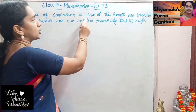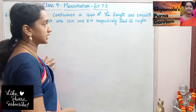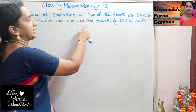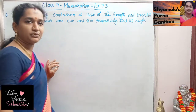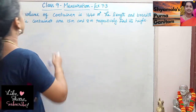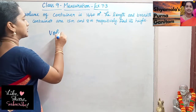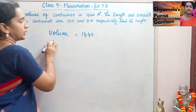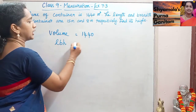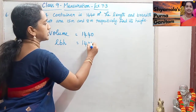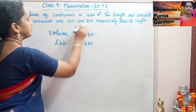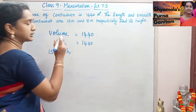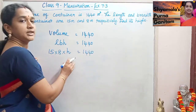The volume of a container is 1440 cubic meters. The length and breadth of the container are 15 and 8 respectively. Find its height. So, the volume of a container is given as 1440. We know that volume is length into breadth into height, that is given as 1440. Length and breadth are given as 15 and 8. We are asked to find the measurement of the height.